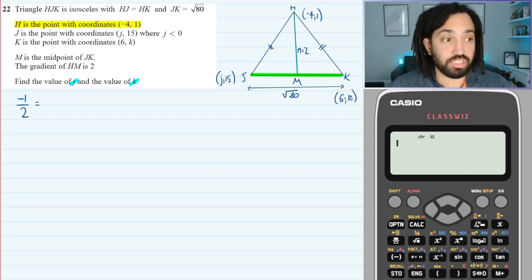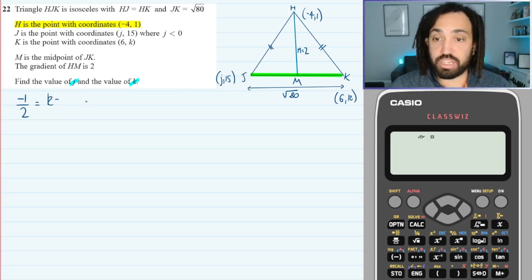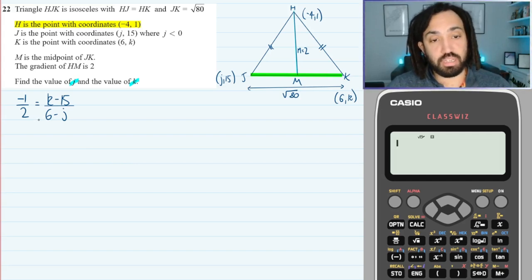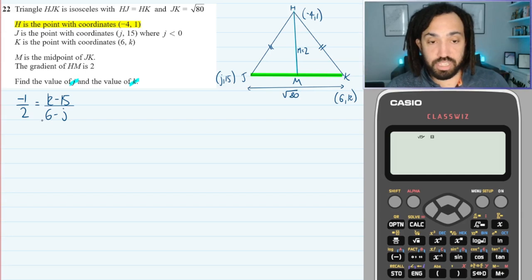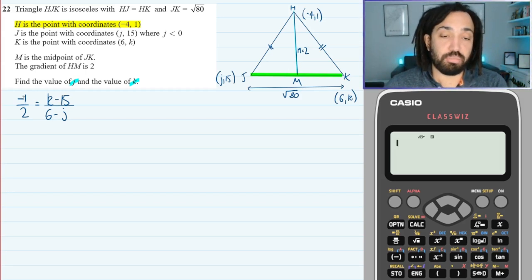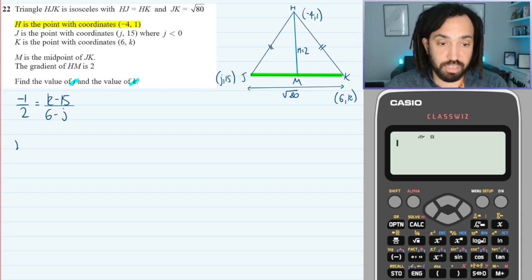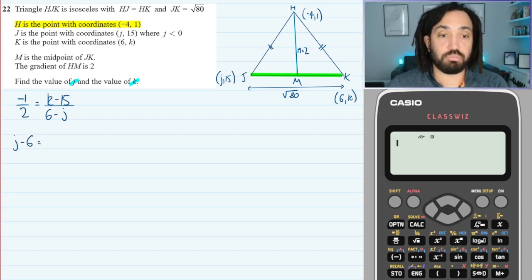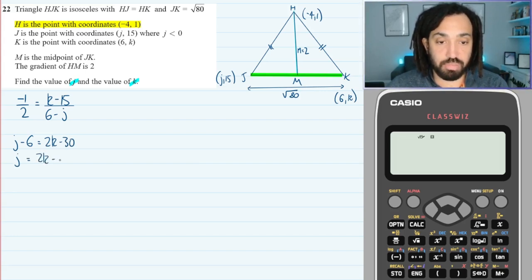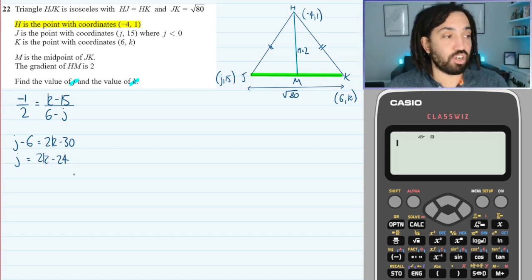Because the green line is perpendicular to the blue line which has a gradient of 2, it will have a gradient of negative 1 over 2 — the negative reciprocal. To find the gradient I would do Y2, which is K, minus Y1, which is 15, over X2, which is 6, minus X1, which is J. Then I cross multiply: multiply 6 minus J by minus 1 and 2 by K minus 15. That gives me J minus 6 equals 2K minus 30, and therefore J equals 2K minus 24.